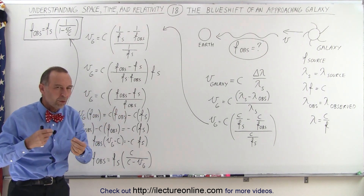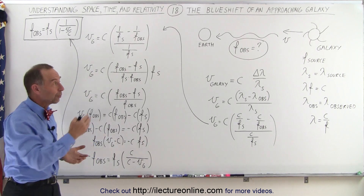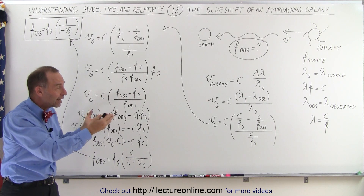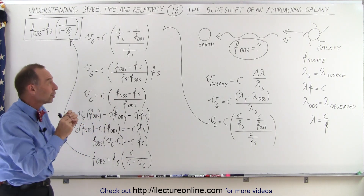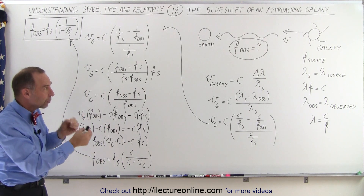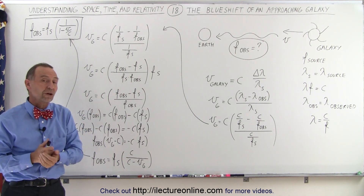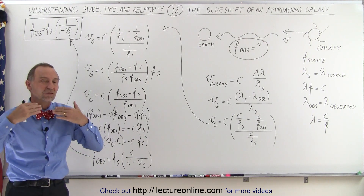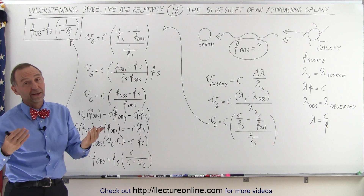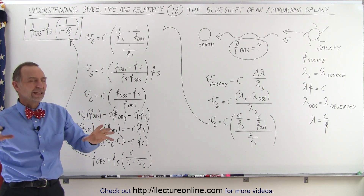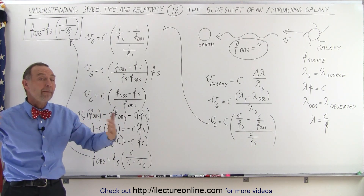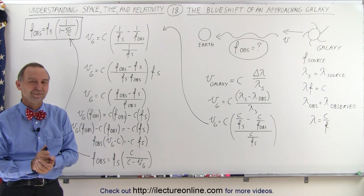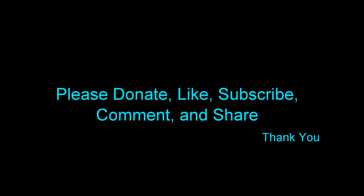We'll explore that a little bit more to see what really happens when we start moving at very high velocities. But at least this gives us a way of determining how the equation was derived to relate the frequency observed to the frequency of the source of an approaching object. On the next video, we'll reverse it and look at the red shifting that happens when galaxies move away from us — the predominant number of galaxies out there are all moving away from us, giving us an indication that space appears to be expanding. And that's how it's done. Thank you.